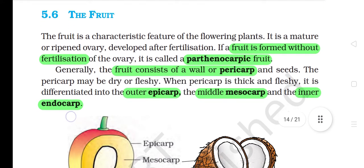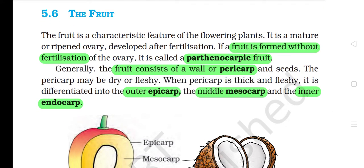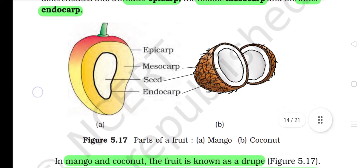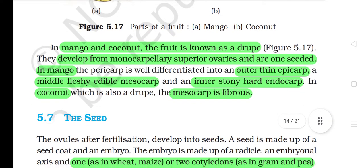5.6 The fruit. The fruit is a characteristic feature of the flowering plants. It is a mature or ripened ovary developed after fertilization. If a fruit is formed without fertilization of the ovary, it is called a parthenocarpic fruit. Generally, the fruit consists of a wall or pericarp and seeds. The pericarp may be dry or fleshy. When pericarp is thick and fleshy, it is differentiated into the outer epicarp, the middle mesocarp and the inner endocarp. In mango and coconut, the fruit is known as a drupe. They develop from monocarpellary superior ovaries and are one-seeded. In mango, the pericarp is well differentiated into an outer thin epicarp, a middle fleshy edible mesocarp, and an inner stony hard endocarp. In coconut, which is also a drupe, the mesocarp is fibrous.